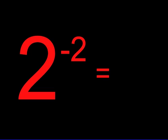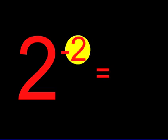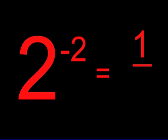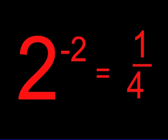Let's try two to the negative two power. Once again, we have a negative exponent, so we know we are dividing one into pieces. Two to the second power is two times two, which is four. So our answer is one over four, or one fourth.